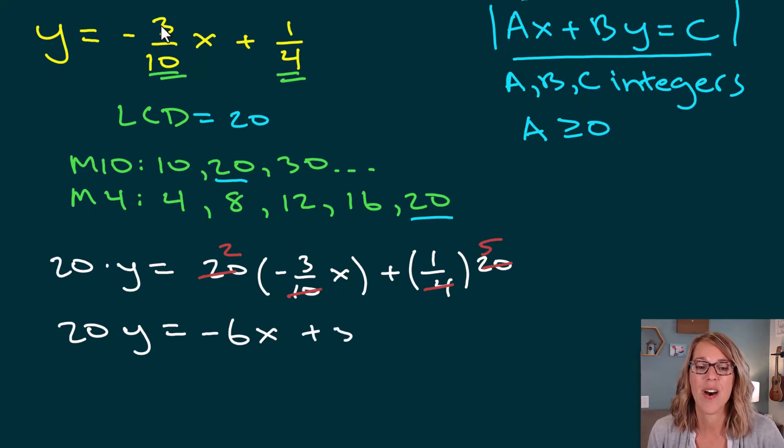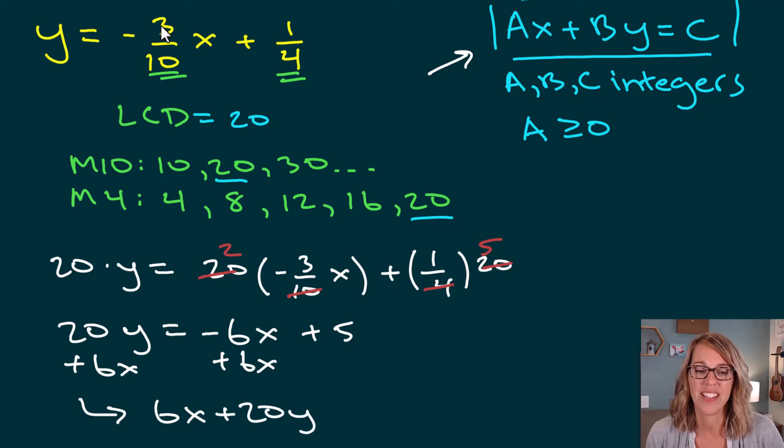I am almost to standard form. I just need the 6x to move to the other side. I'm going to add it to both sides and write the 6x first. So we end up with 6x plus 20y is equal to 5. And that is our standard form equation. You've got this. Take a look at my next video. And thanks for watching.